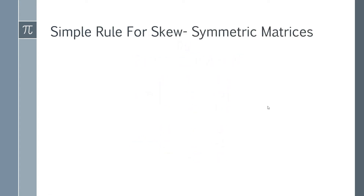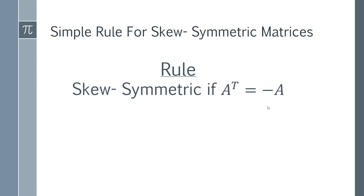In the case of a skew symmetric matrix you have a similarly simple rule with a slight change. A matrix is skew symmetric if A transpose is equal to the negative of your matrix A. So if you find the transpose of A and it's equal to exactly the negative of every single element of your original matrix A, you have a skew symmetric matrix.